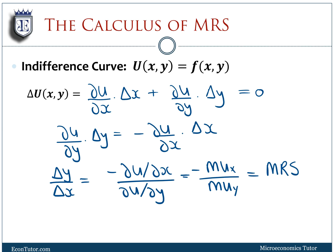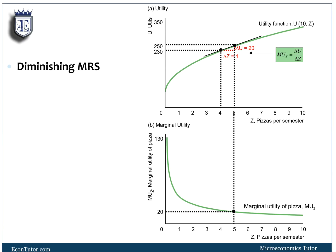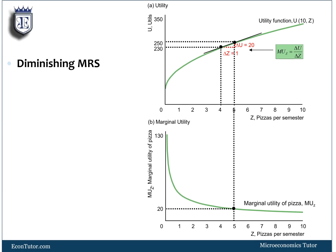The MRS, which is ΔY/ΔX, is the ratio of the two marginal utilities of the utility function. The MRS is actually a diminishing function. Recall that marginal utility is diminishing in nature — as you have more of something, your marginal utility goes down, and as you have less of something, your marginal utility goes up.